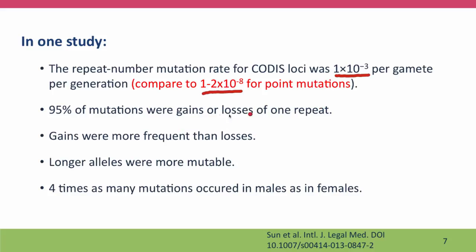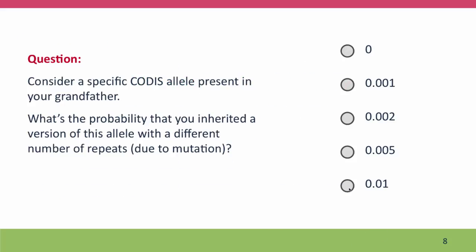Most of the mutations that occurred were a single repeat — a gain or a loss of one repeat, more commonly gains than losses. Longer alleles with more repeats were more mutable, presumably because they provide more opportunities for DNA polymerase to slip. And four times as many mutations occurred in the male parent as in the female parent, consistent with the much larger number of DNA replications in the male germline. So here's a question: think about a particular CODIS allele that was present in your grandfather. What's the probability that the allele you inherited from your grandfather, via your father, has a different number of repeats because of mutation?